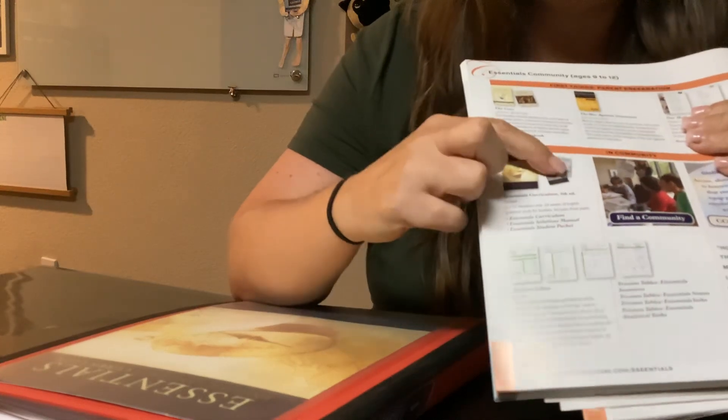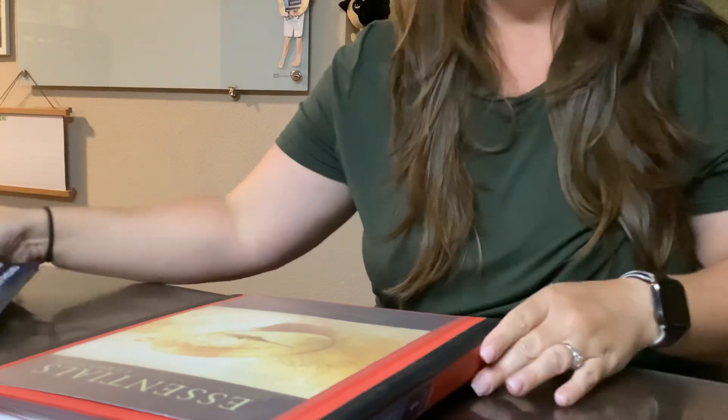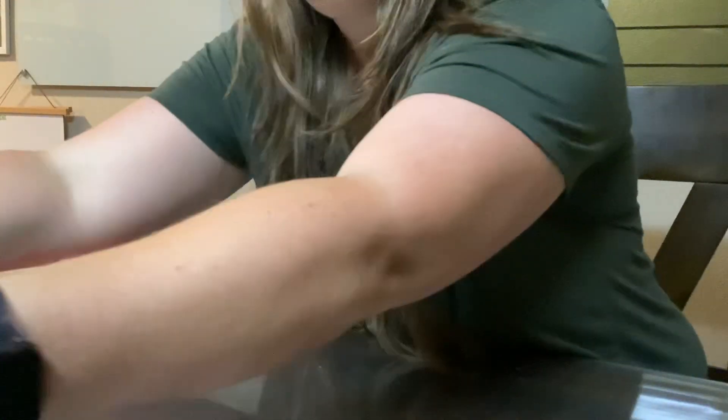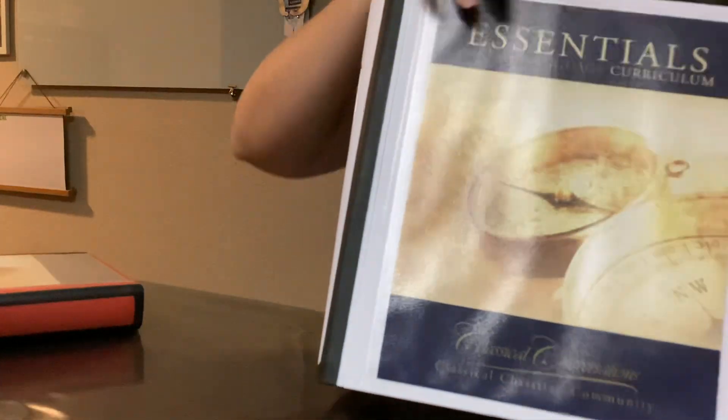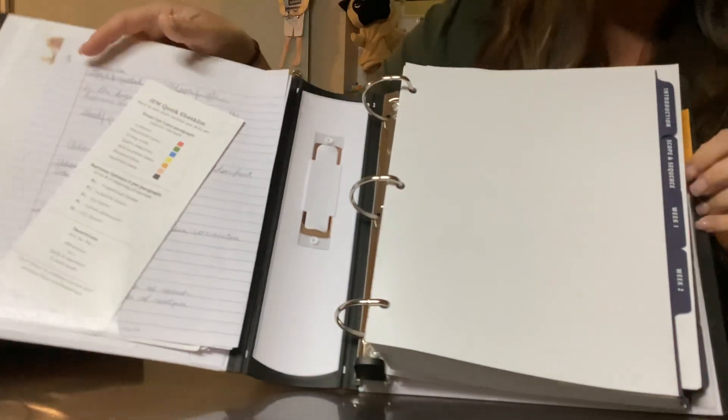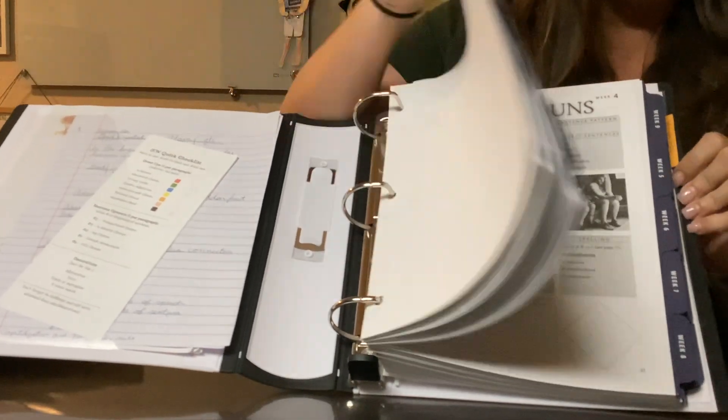It'll come into two separate portions. You'll have your EEL guide, that's the essentials of the English language, and I have put mine in the binder like this, and that's the one that will have the tabs for the 24 weeks and some additional tabs that you'll be utilizing as well.